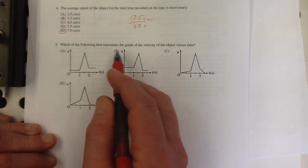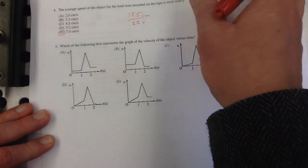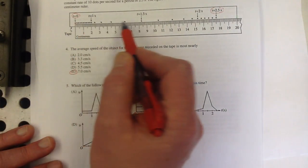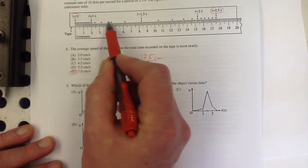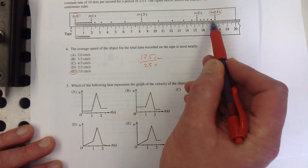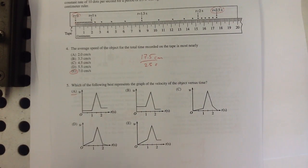Which of the following best represents the graph of the velocity of the object versus time? And we just talked about that, didn't we? So the velocity is kind of slow-ish, and then it's accelerating, increasing, and then it decelerates, and then it's going slow-ish again, but not as slow as it was here. And that looks awfully promising, doesn't it?